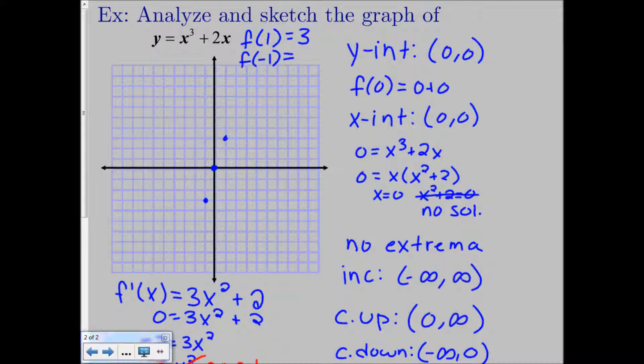And since these look like they're drawn on a straight line, we might want to find 2 more points. So let's also find f of 2 and f of negative 2. So f of 2 is going to be 2 cubed, which is 8, plus 2 times 2. So we're going to get 8 plus 4, which is 12. So that's going to go a little bit off of our picture. So that's going to be approximately up here.